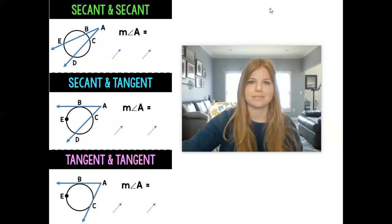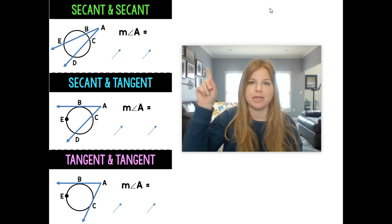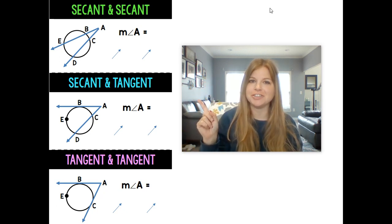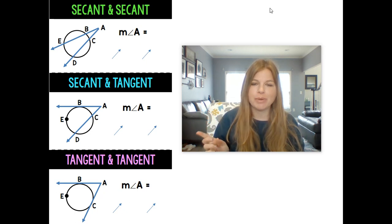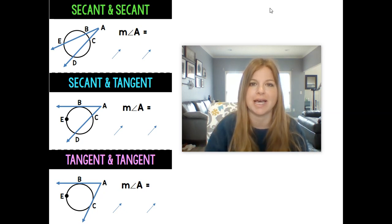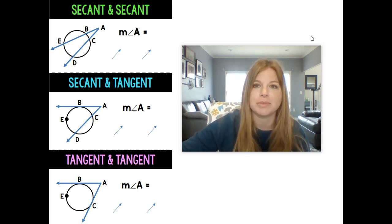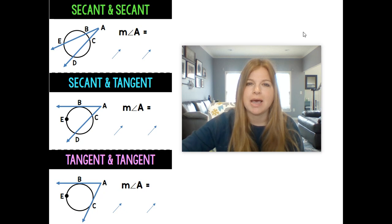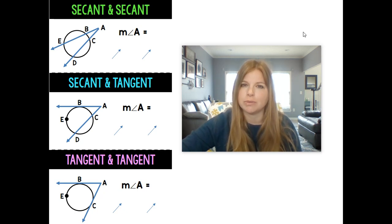Today we're going to talk about where two secants intersect outside of the circle, a secant and a tangent intersecting outside of the circle, and when two tangents intersect outside of a circle. We're going to be finding the angle measure of that intersection that's outside. You're going to see a lot of very similar situations happening from each one. Even though they look different, you're really kind of doing almost the exact same thing.